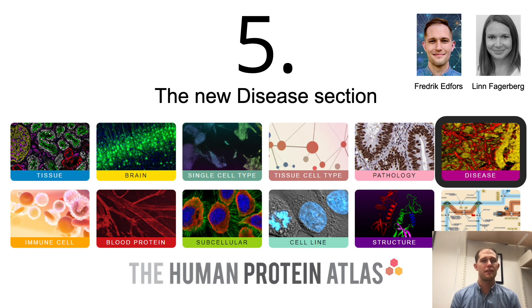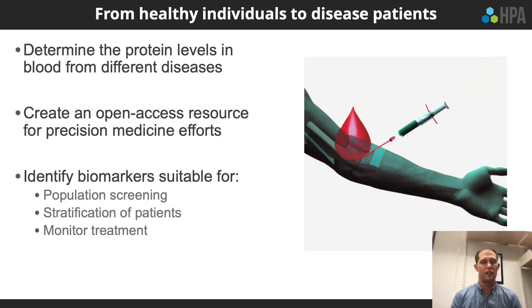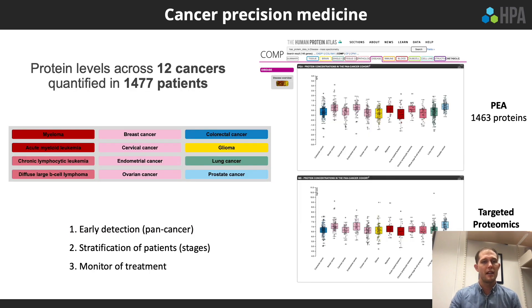Fredrik Edfors introduces the new Disease Blood Atlas section, which aims to visualize plasma protein profiles for major diseases. This first release focuses on cancer and is based on blood samples from more than 1,400 cancer patients obtained from the Swedish UK Biobank. Early and accurate diagnosis is critical in cancer precision medicine, and 12 different cancers — including some of the most common — have been profiled.